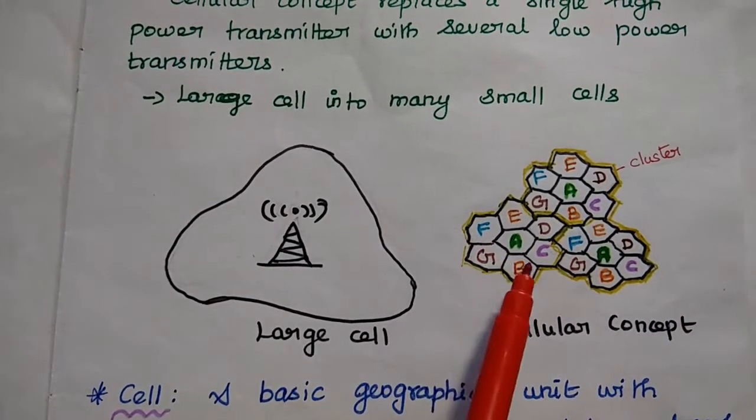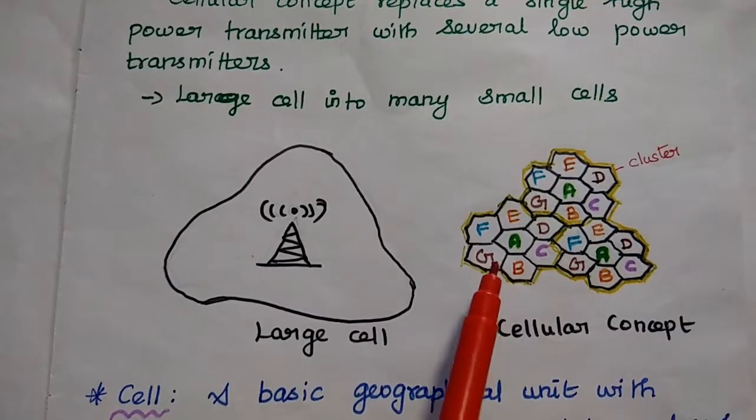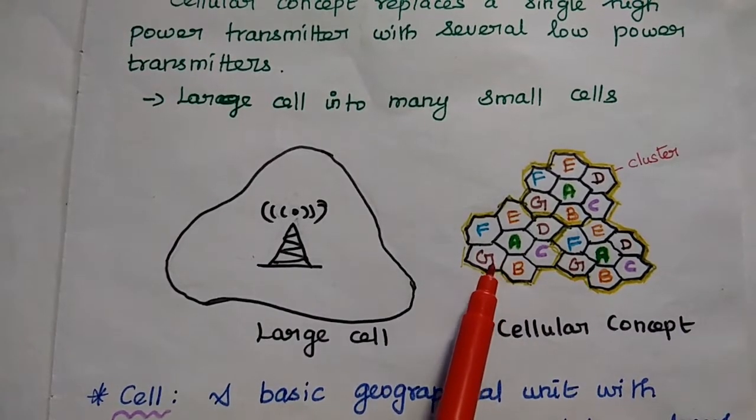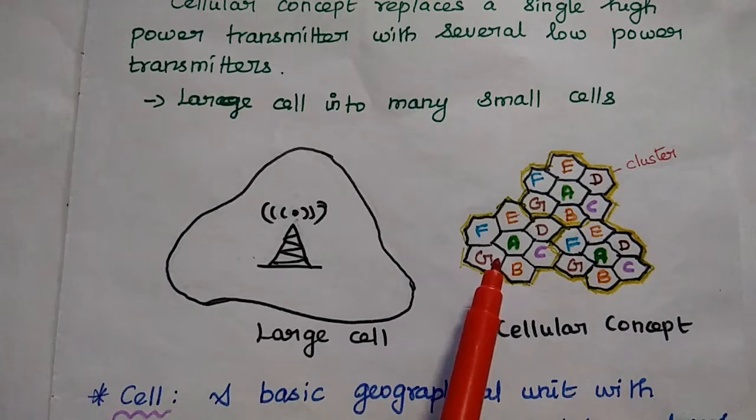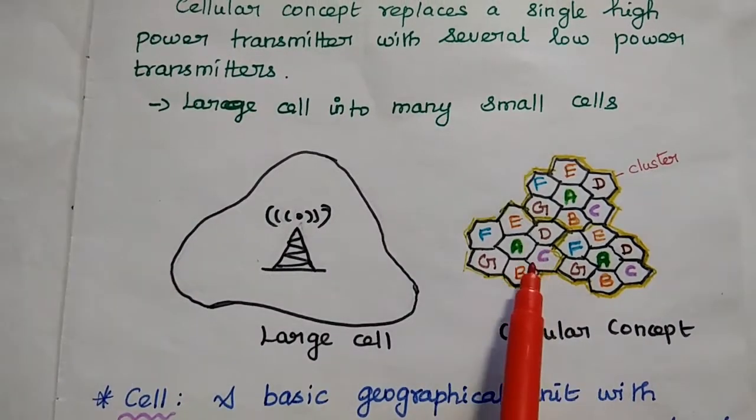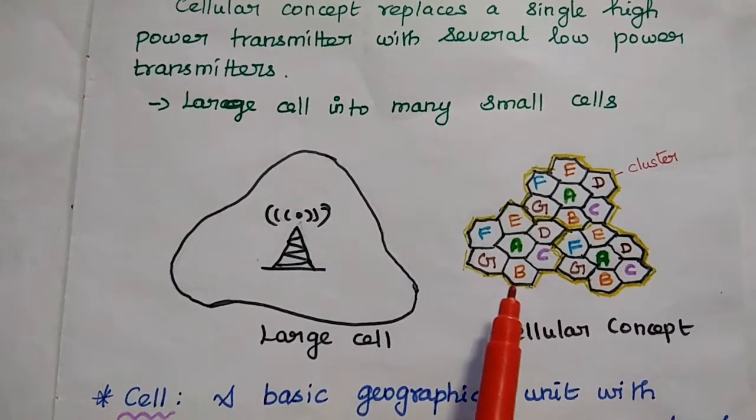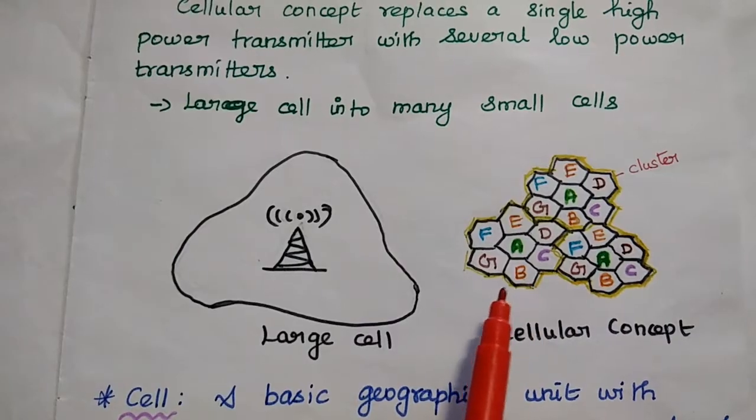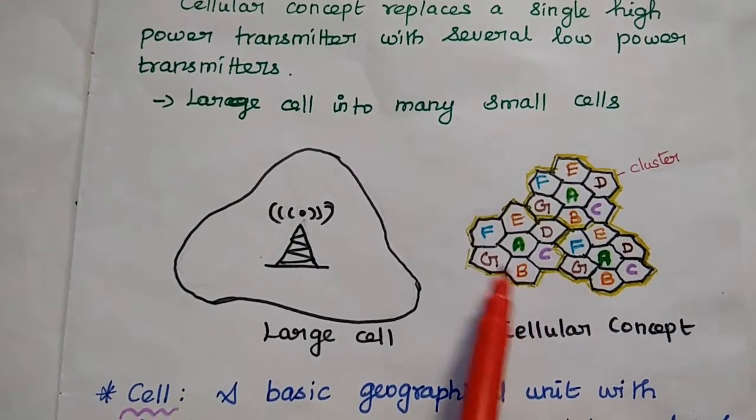Each cell is having its own base station. Base station is nothing but the transceiver. It can transmit as well as receive the signal. The base station can act as a communication point for one or more mobile devices.